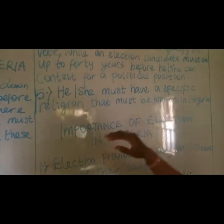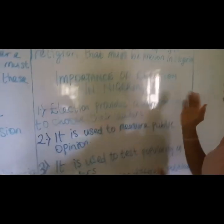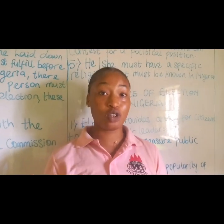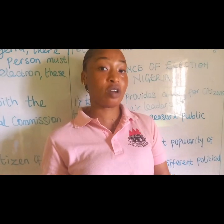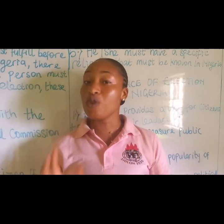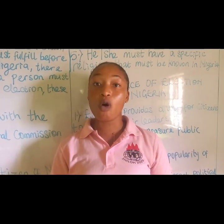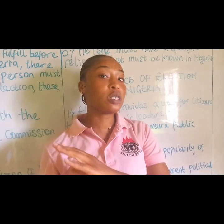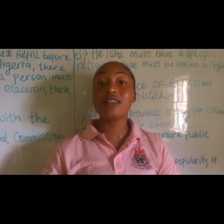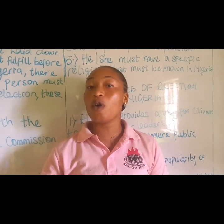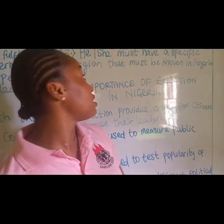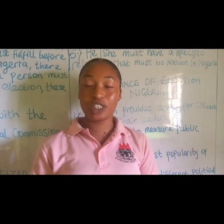The fifth qualification says he or she must have a specific religion that is known in Nigeria. In Nigeria, we have three main types of religion: Christianity, Islam, and traditional religion. Anyone who wants to contest for any political position must belong to one of these religions. If he or she is not part of those recognized religions, they cannot contest, as those are the only religions well known in Nigeria.